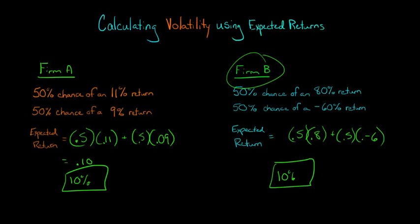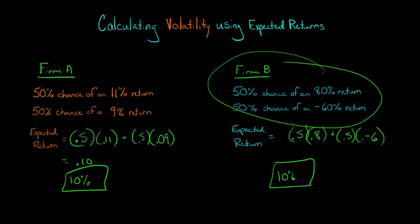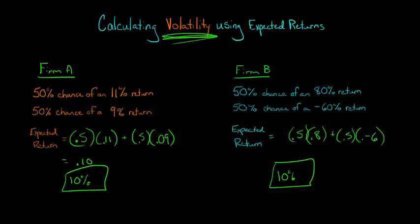But with firm B, on the other hand, you're either going to get a return of 80% or you're going to lose 60%. Now, ultimately that comes out to an expected return of 10%, which is the same as firm A. But you can see where you could say, hey, this is much more of a gamble. There's a lot more risk here in terms of whether or not we're going to realize a return. So, people take that into consideration. They say, look, there's more volatility for firm B.